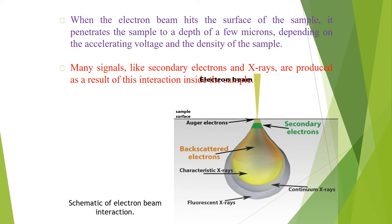When the electron beam hits the surface of the sample, it penetrates the sample to a depth of a few microns, depending on the accelerating voltage and the density of the sample. Many signals, like secondary electrons and X-rays, are produced as a result of this interaction. A schematic diagram of electron beam interaction with the sample shows Auger electrons, secondary electrons, backscattered electrons, characteristic X-rays, continuum X-rays, and fluorescent X-rays.